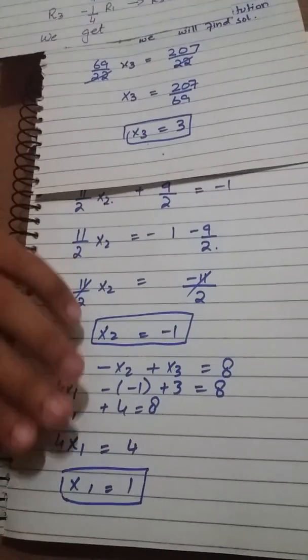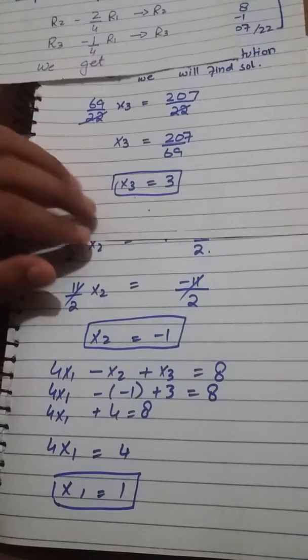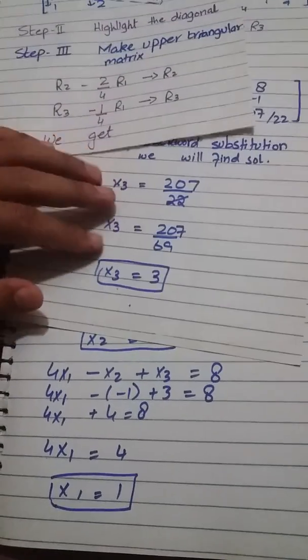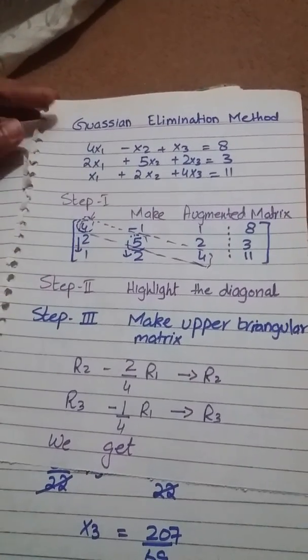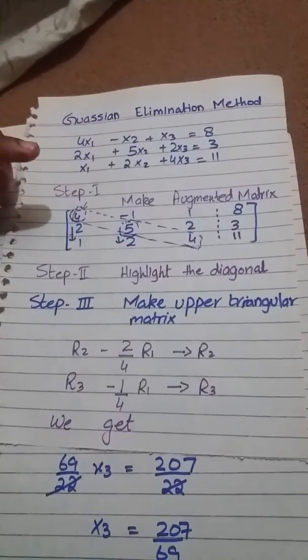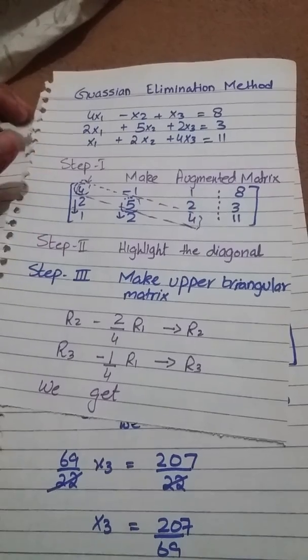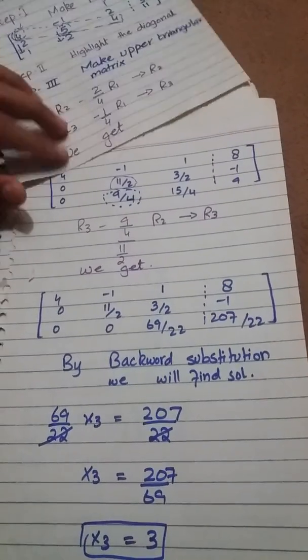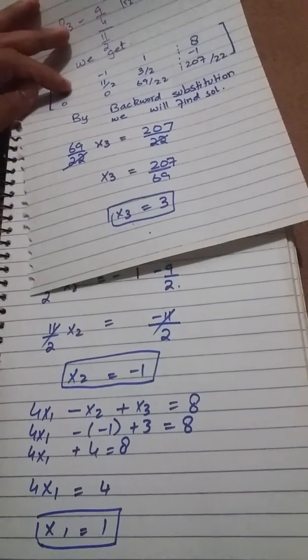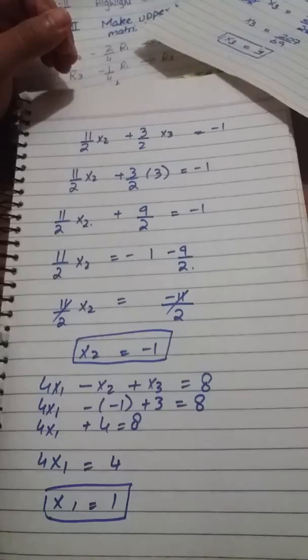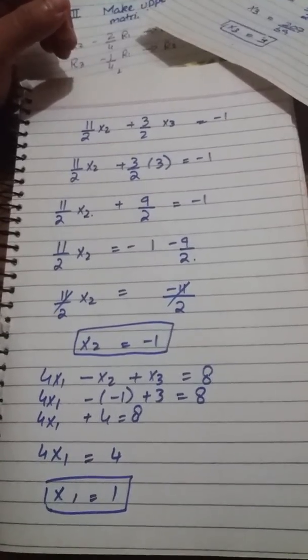And hence we find the three solutions of our given linear system: X1, X2, and X3. So the summary of today's lecture is how to find a solution of the linear system with the help of Gaussian elimination method. Step 1 is make augmented matrix, step 2 highlight the diagonals, step 3 make upper triangular matrix, and then do backward substitution to find the solution of the given linear system. If you like this video please subscribe our channel for new videos. Thank you.